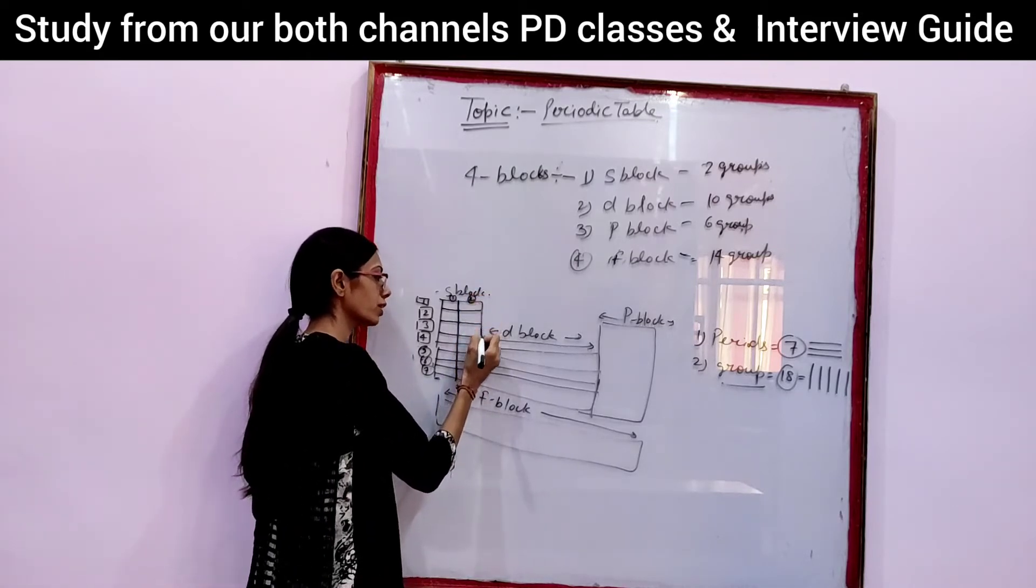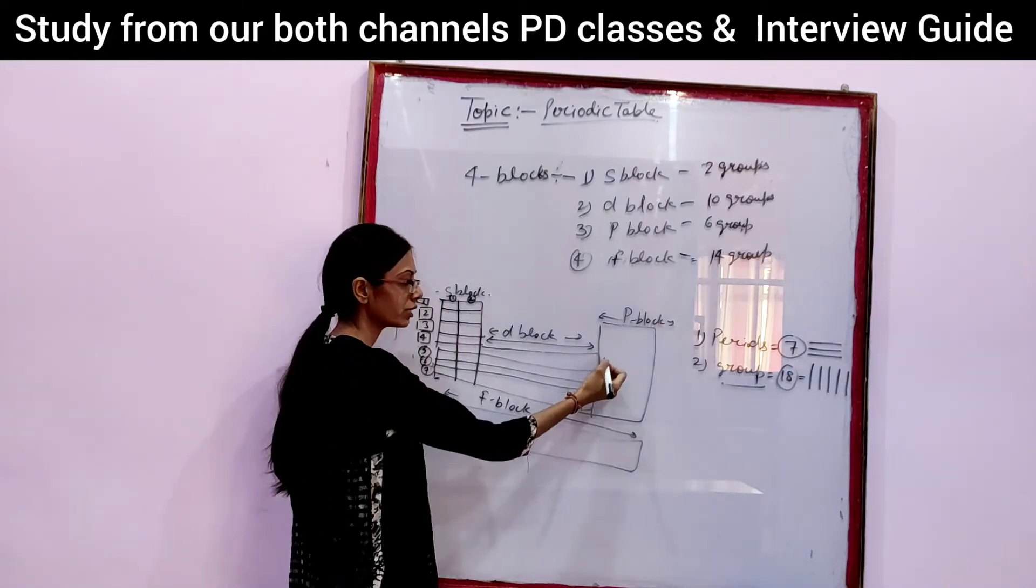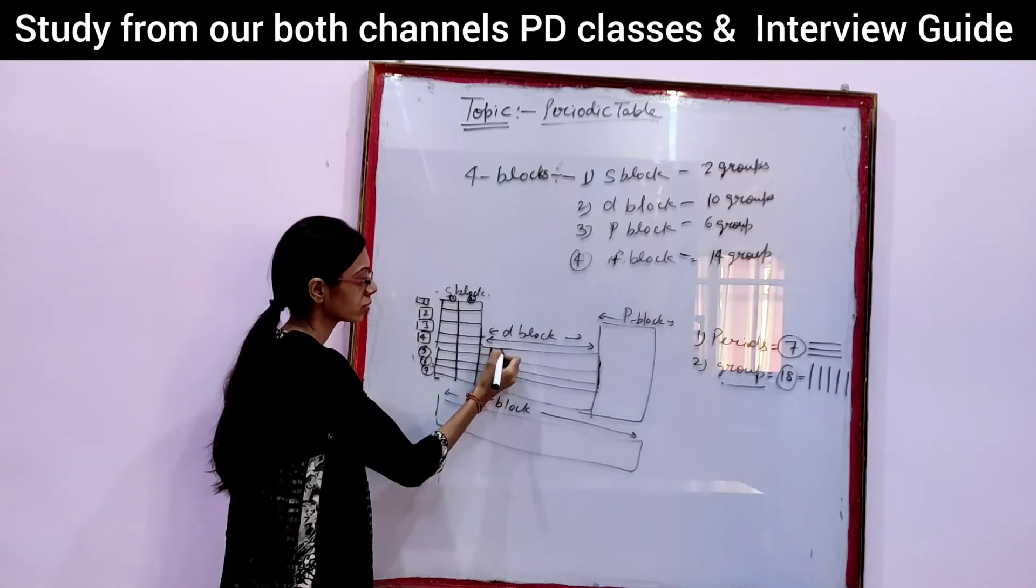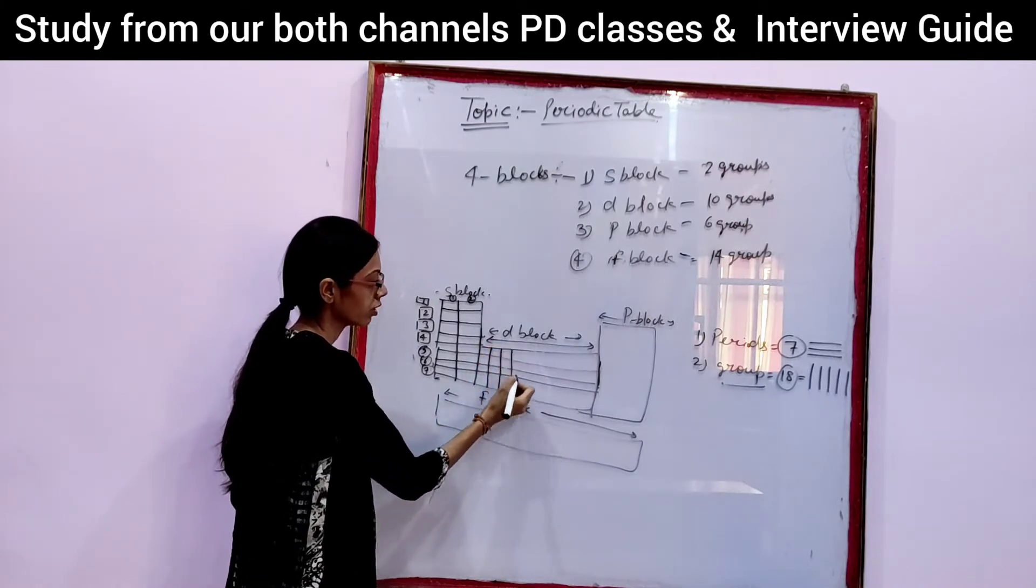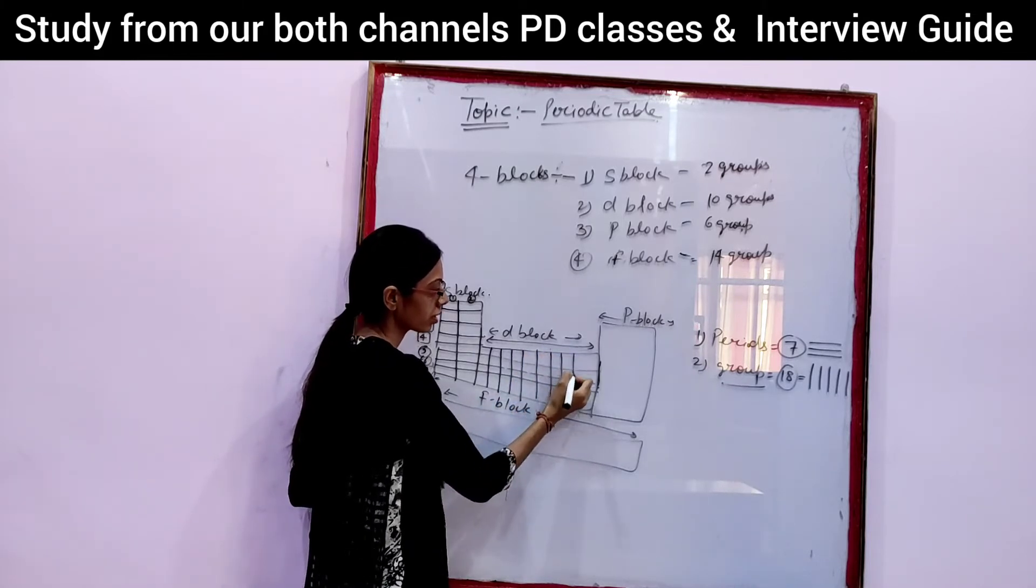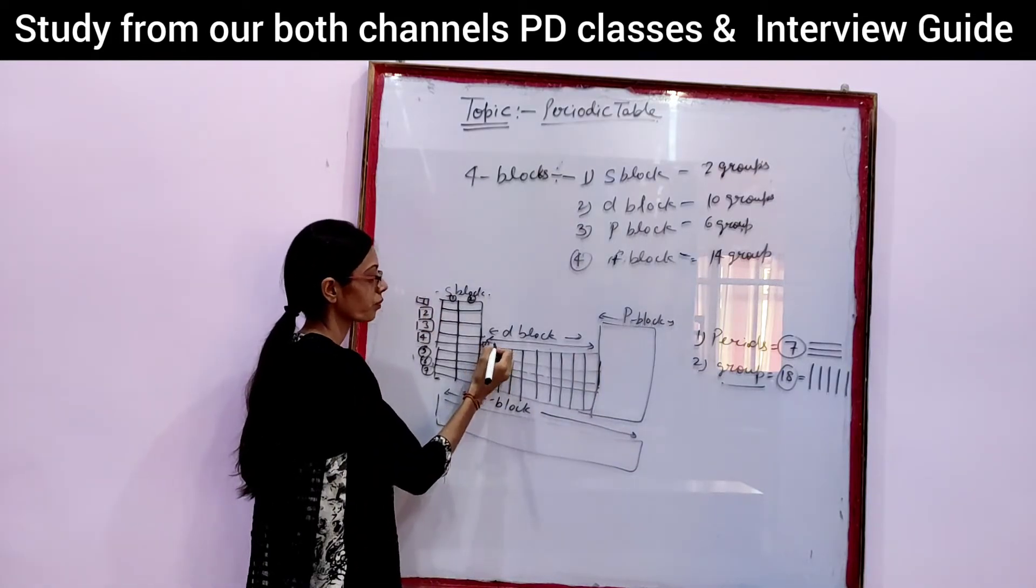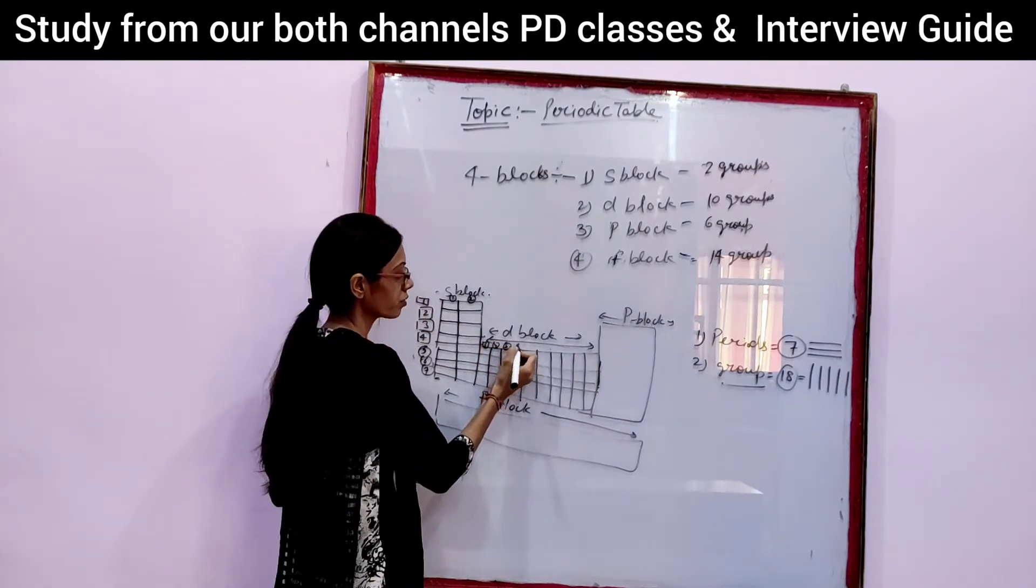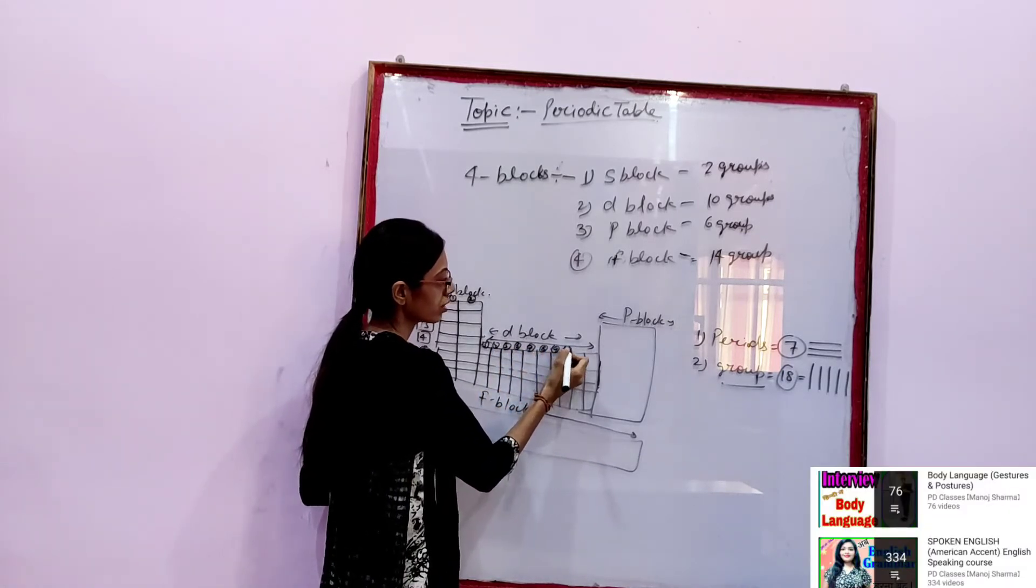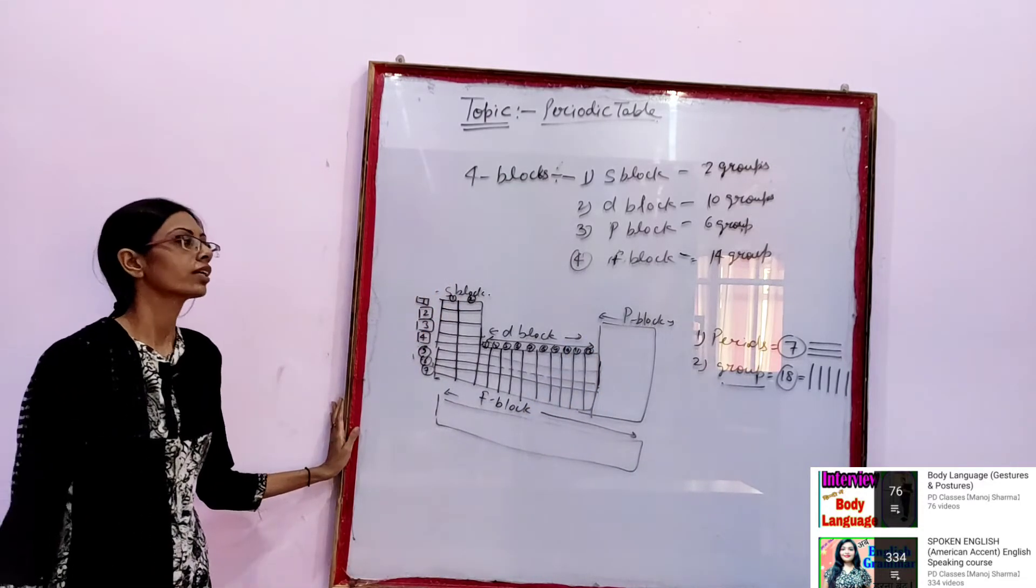Now, S block I will divide into 2 groups, 1st and 2nd. Now I will divide D block also. It is also divided into 10 parts: 1, 2, 3, 4th, 5th, 6th, 7th, 8th, 9th, 10th, 11th, and 12th, right students?